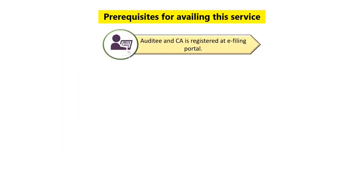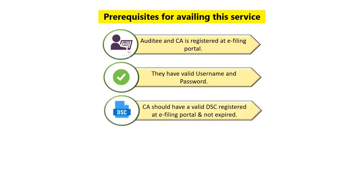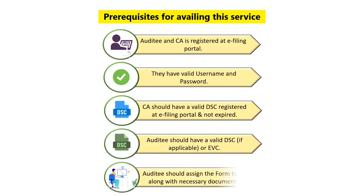Before going into the step-by-step process of filing Form 10B, let us look at the prerequisites. The auditee and the Chartered Accountant should be registered on the e-filing portal with a valid username and password. The CA should have a valid Digital Signature Certificate registered on the e-filing portal that has not expired. The auditee should have a valid DSC if applicable, or an e-verification code.